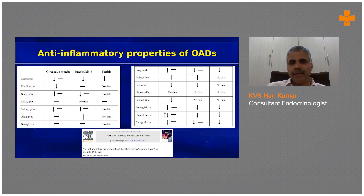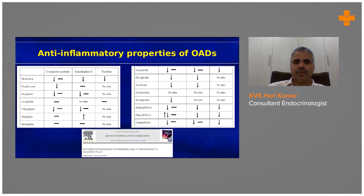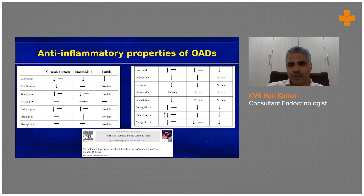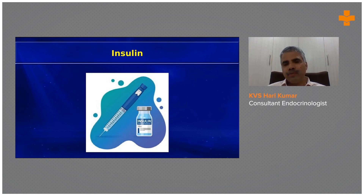To summarize the anti-inflammatory properties discussed: the common parameters monitored in COVID management are CRP, IL-6, and ferritin. Studies show that metformin reduces most of these parameters. Some gliptins have shown increased immunomodulatory properties and maximum benefit as standalone molecules. However, by and large in COVID treatment, insulin remains the primary treatment modality.